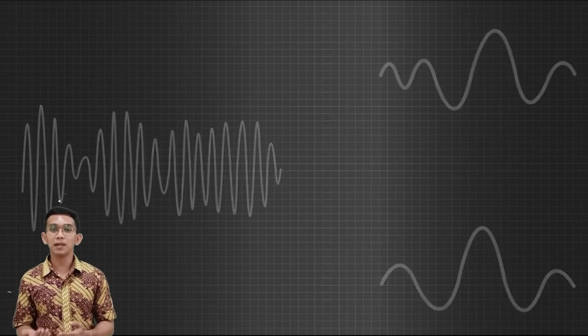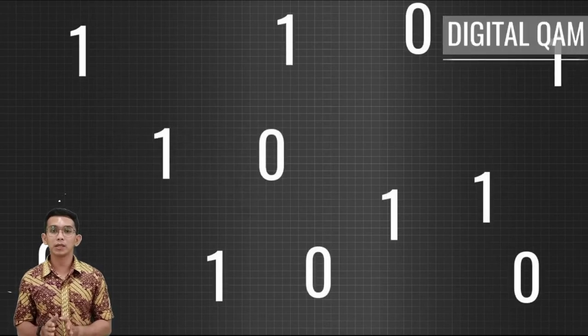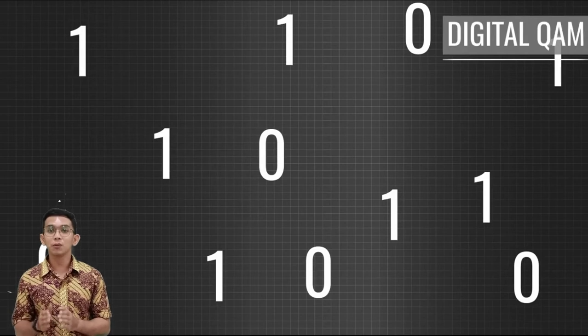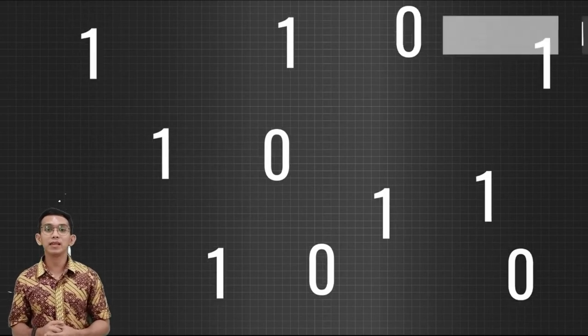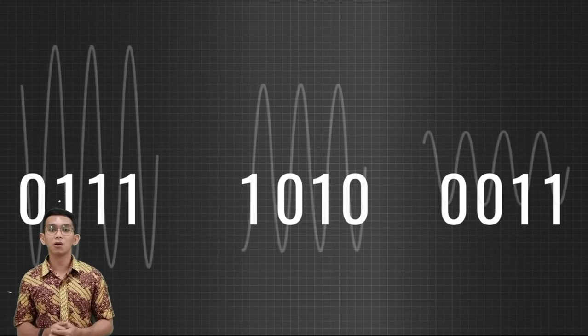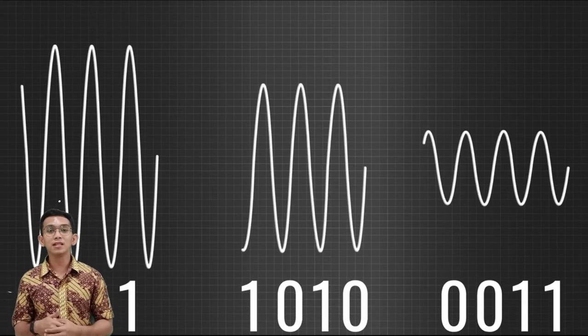In the case of digital QAM, a similar approach is used. Here, instead of analog signals, different combinations of bits are added together to produce a multiplex signal. Let's see how 16-QAM works. If you're familiar with digital technology, you know that any form of data is just a collection of ones and zeros.